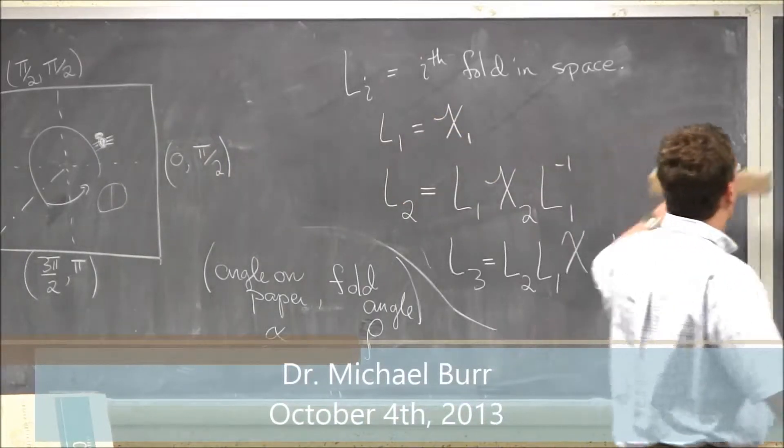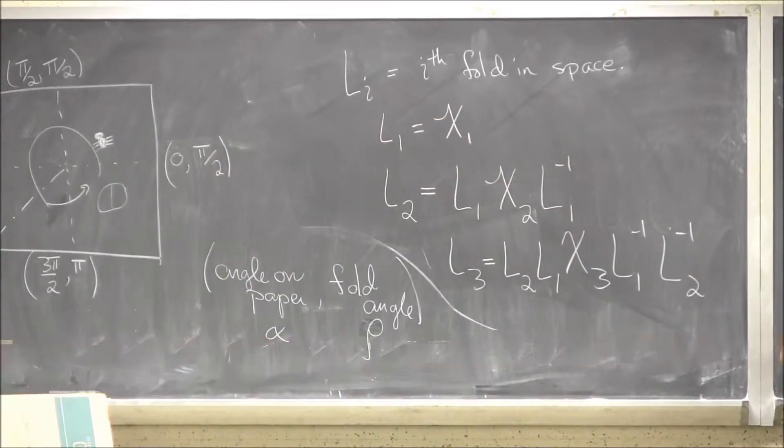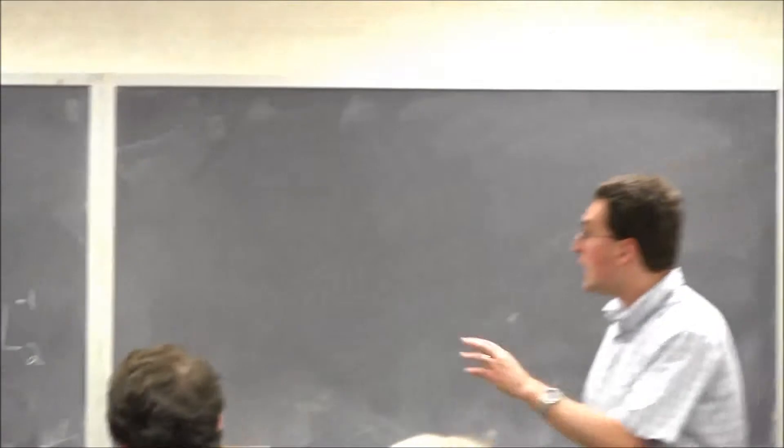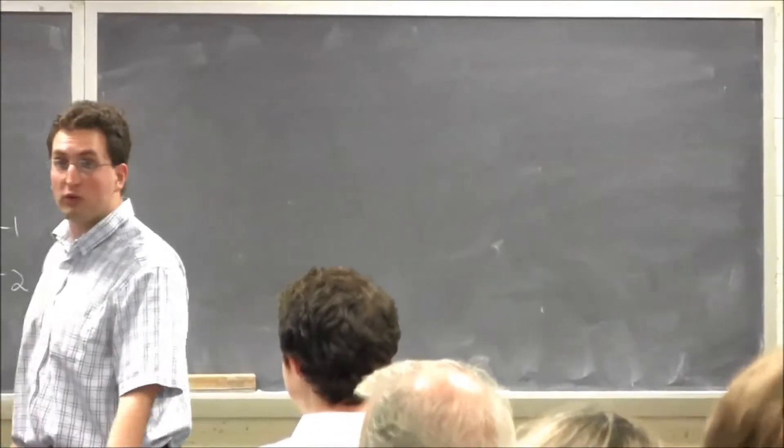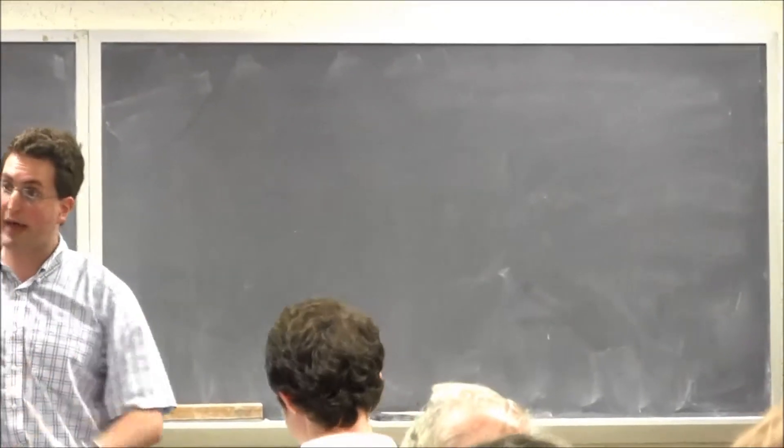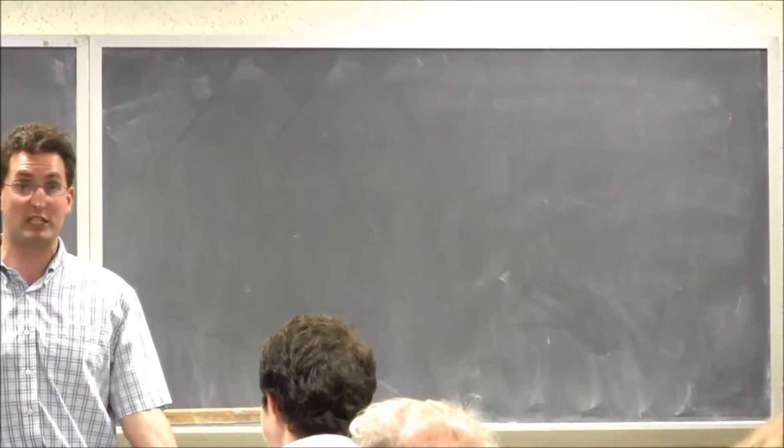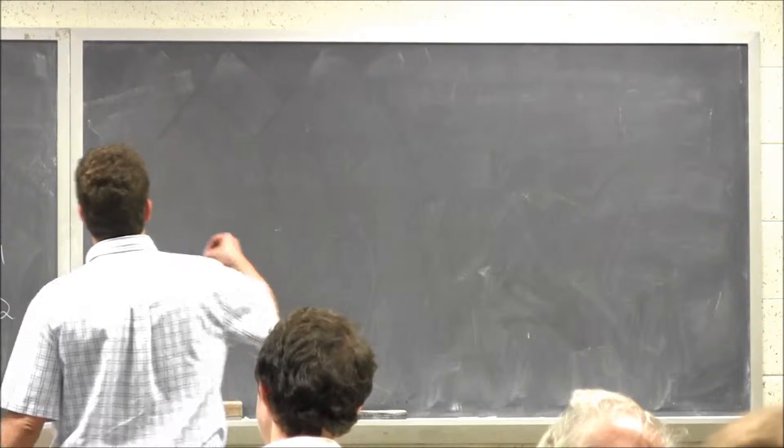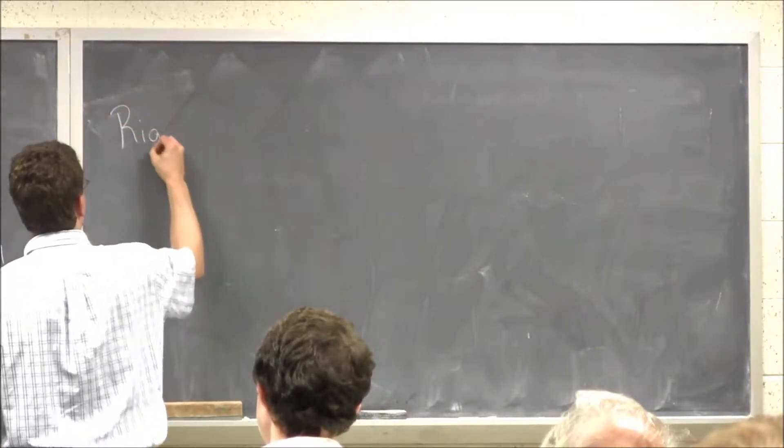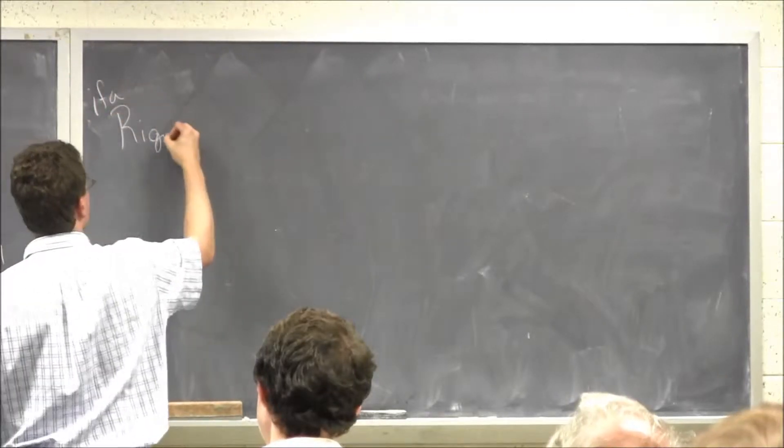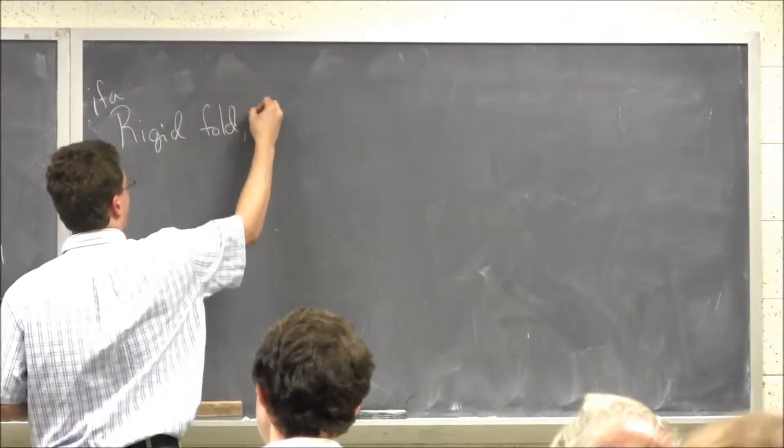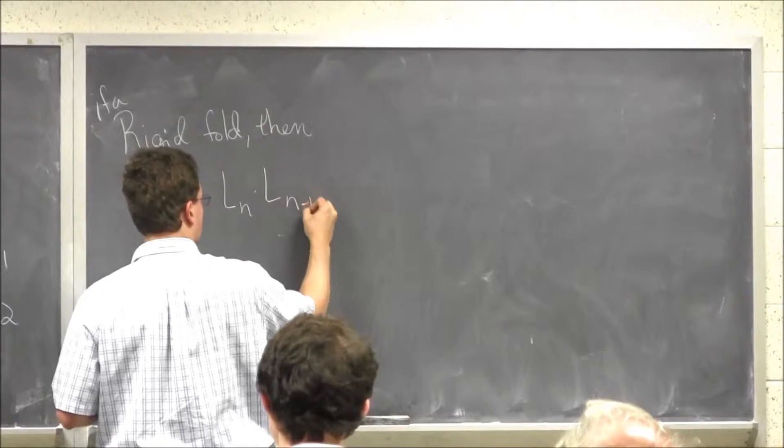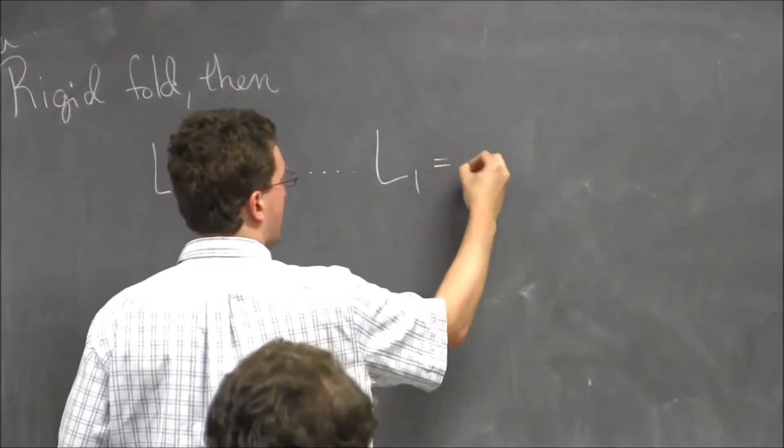So what would it mean to be flat? What would it mean to not bend? We know these matrices end up turning into all the folds. So if it goes in a circle on that folded thing, what should happen? It should end up back where it started. Back where it started in matrix form is called the identity matrix. So if it's a rigid fold, then you get Ln times Ln minus 1 times all the way down to L1 should be your identity matrix.